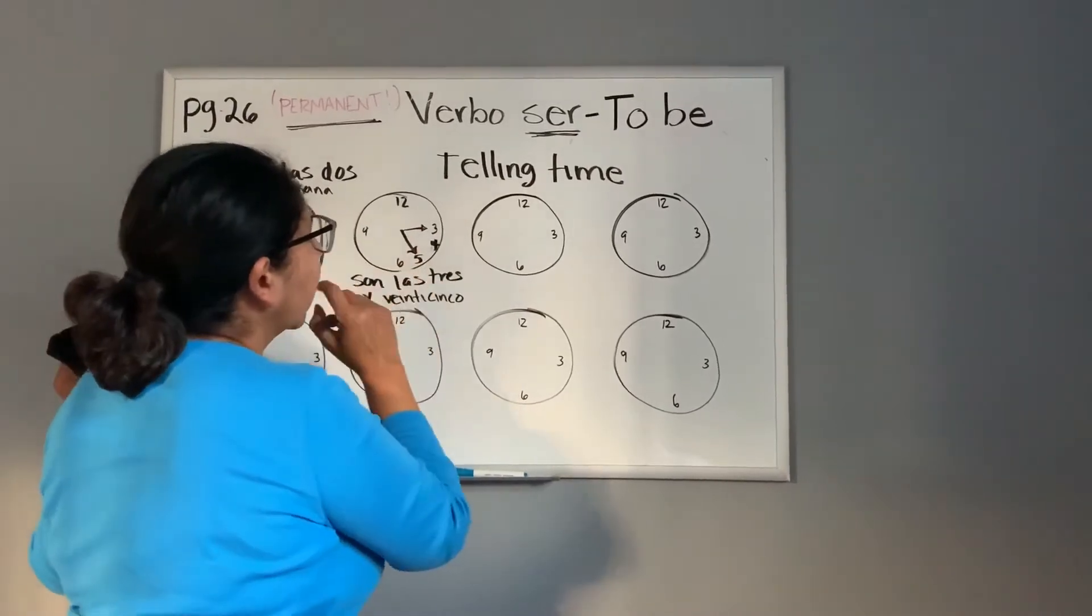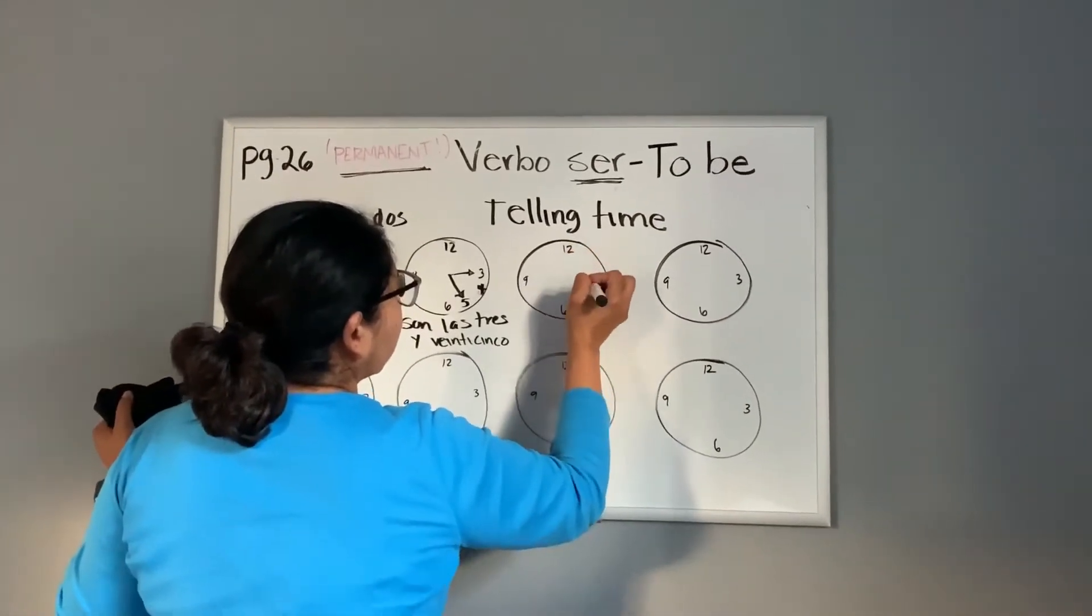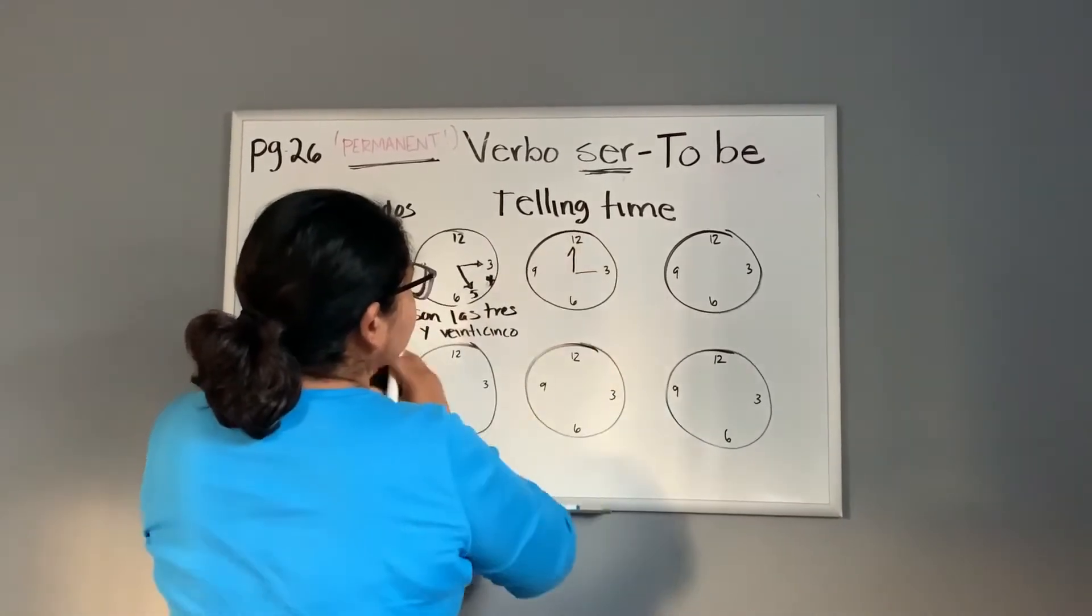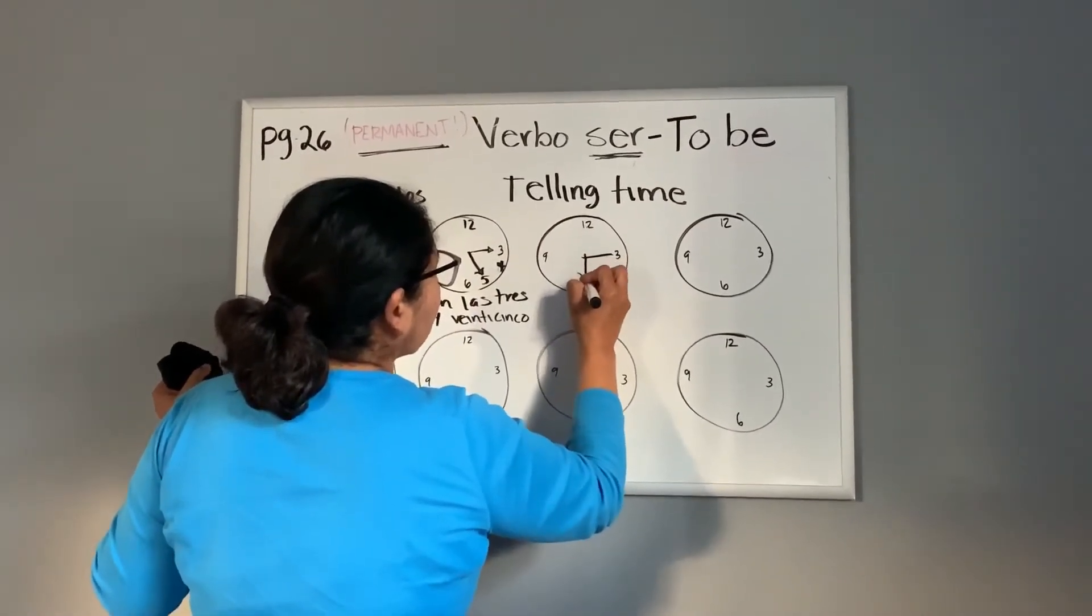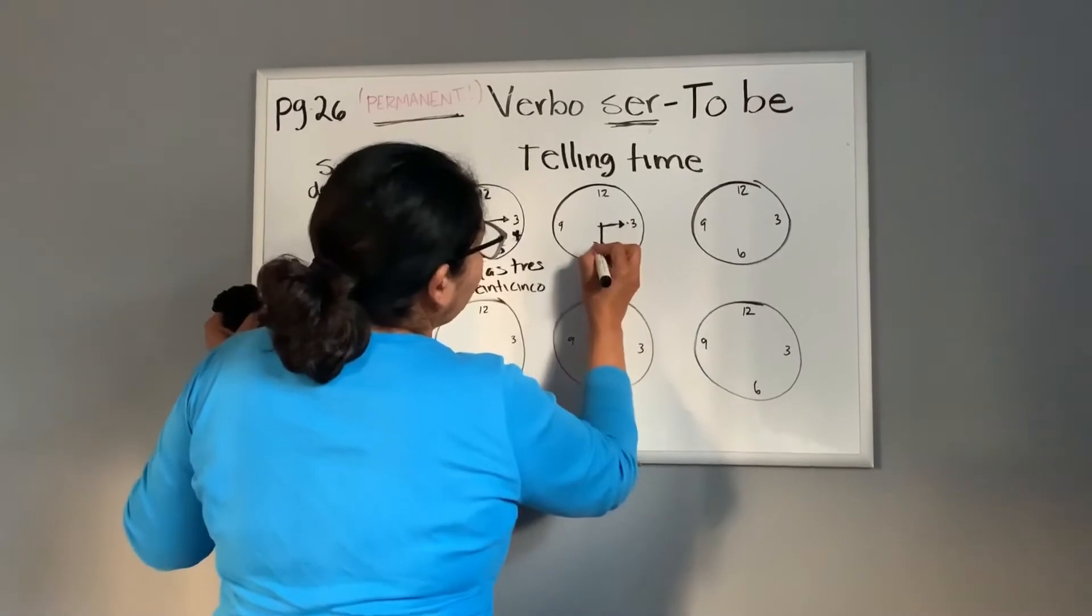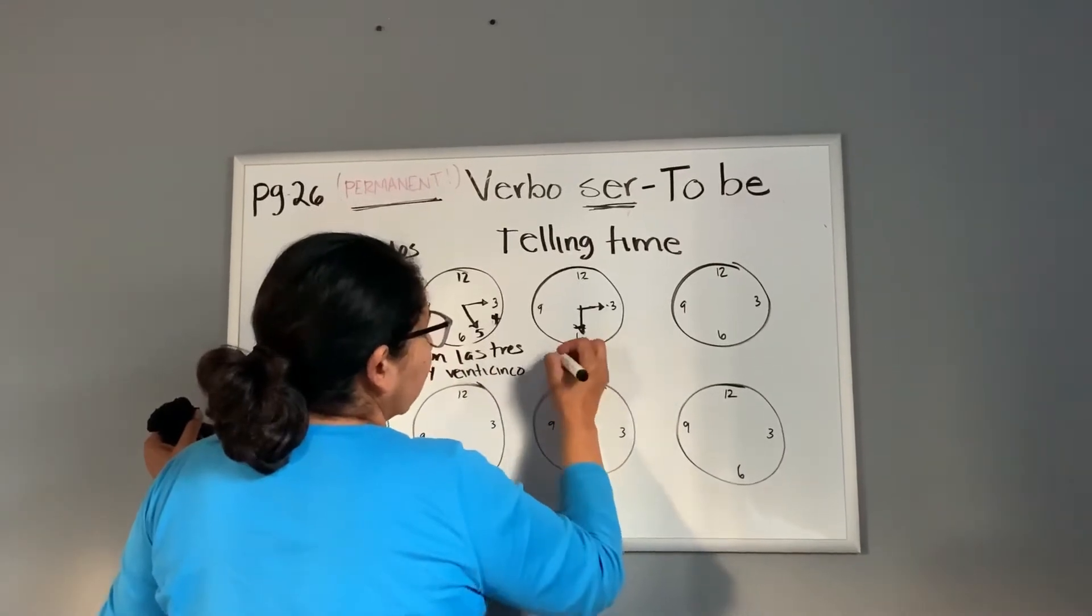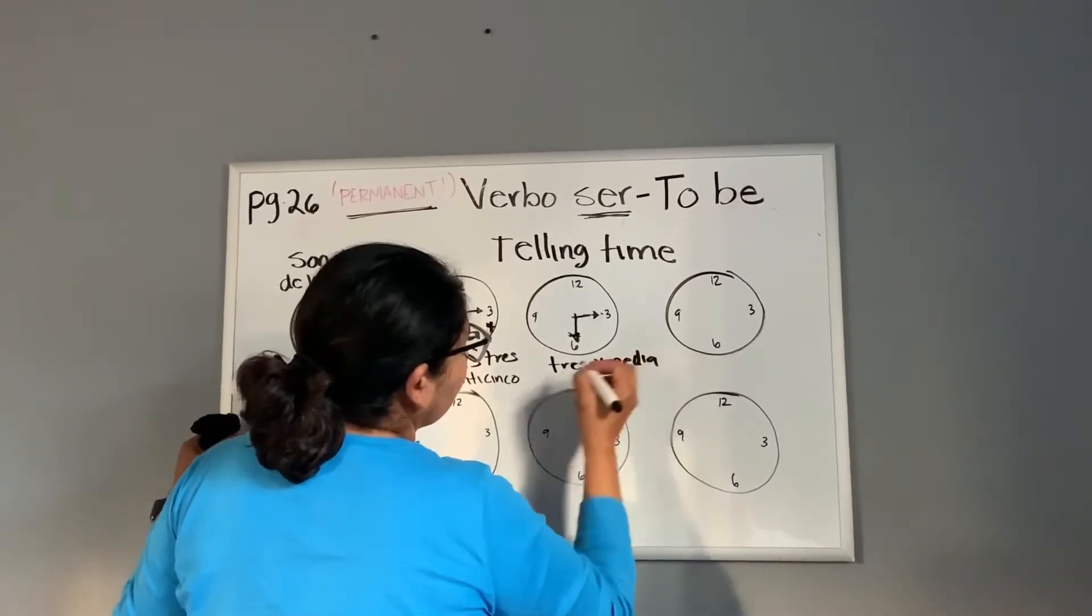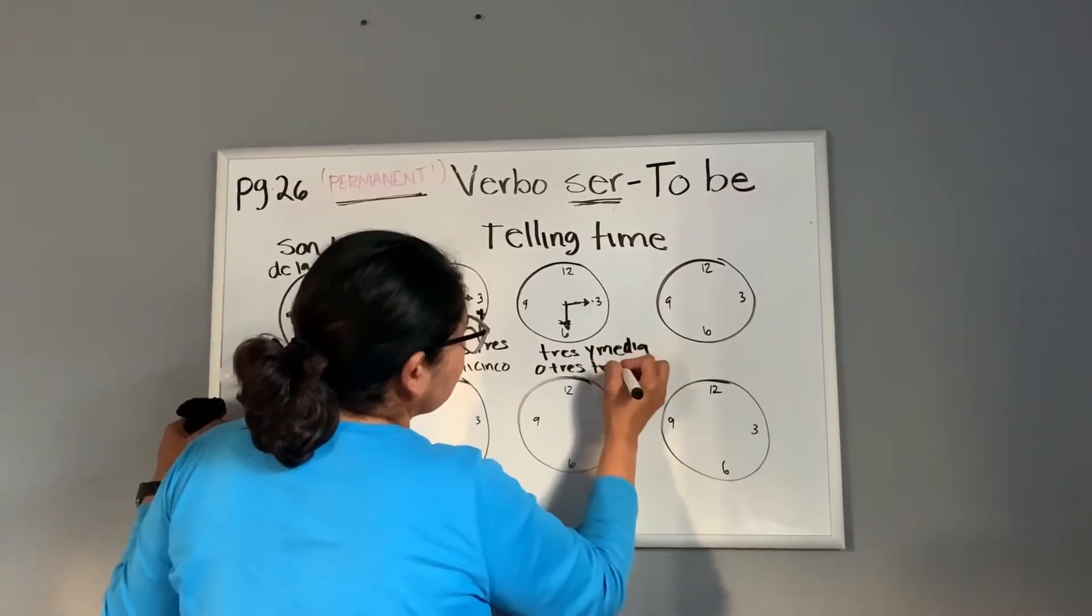So, let's say now it is three thirty. Right here, you can say, three thirty, tres, tres y media, o tres treinta. Either three thirty, or three and a half.